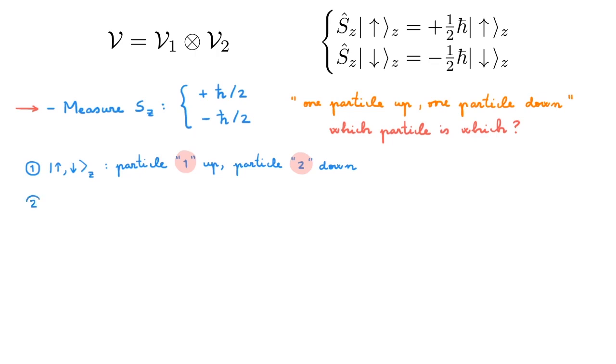This means that we can also write another mathematically valid state like this. And in this case we have that particle 1 is down and particle 2 is up. The second state is also consistent with having measured one particle up and one particle down, which is all we can really say about our system because these two particles are identical. So these two states both appear to be consistent with the outcome of our measurement.